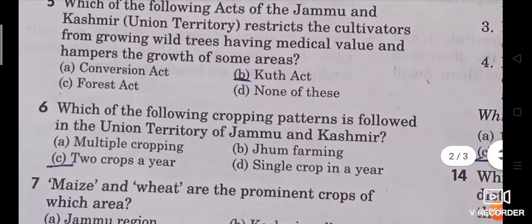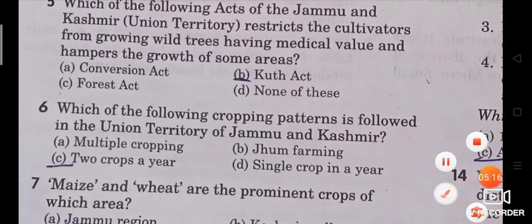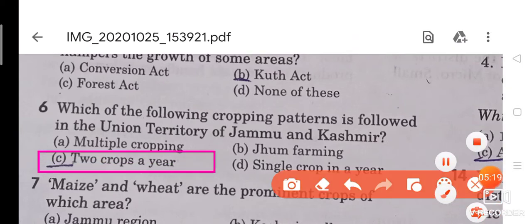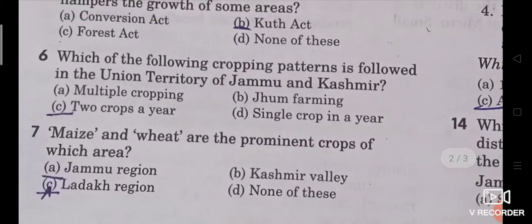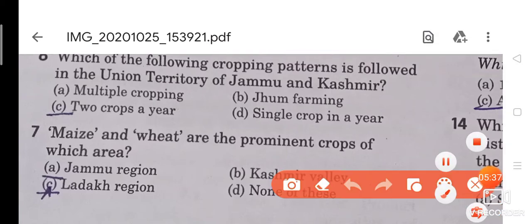Question 6: Which of the following cropping patterns is followed in the union territory of Jammu and Kashmir? The right answer is two crops a year. The cropping pattern followed in J&K union territory is two crops a year. Question 7: Maize and beet are the prominent crops of which area? The right answer is the Jammu region.